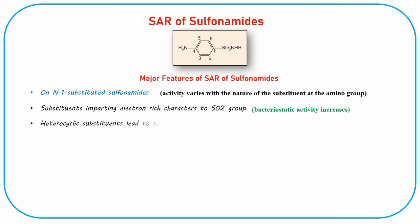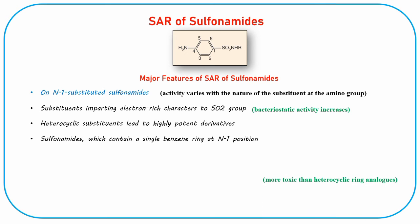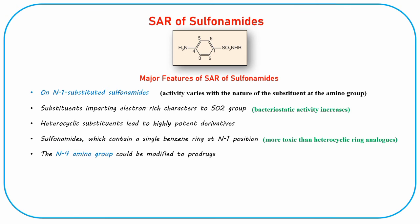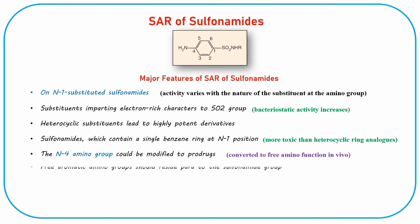Heterocyclic substituents lead to highly potent derivatives, and sulfonamides which contain a single benzene ring at the N1 position are considerably more toxic than heterocyclic ring analogs. The N4-amino group could be modified to form pro-drugs, which are converted to the free amino function in vivo. The free aromatic amino group should reside para to the sulfonamide group; its replacement at the ortho or meta position results in compounds devoid of antibacterial activity.